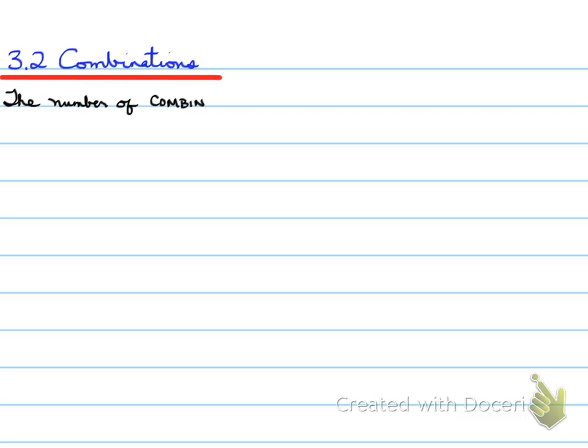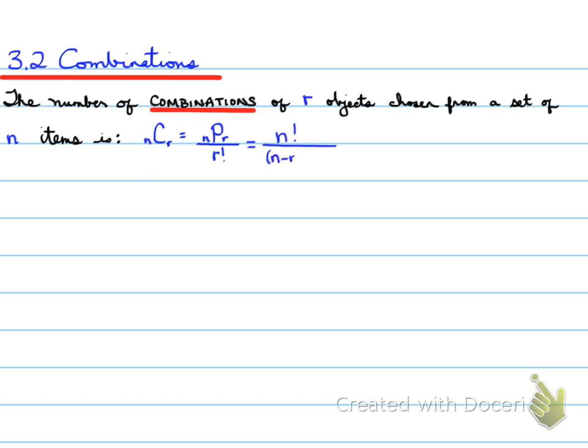3.2, combinations. The number of combinations of R objects chosen from a set of N items is NCR equals NPR over R factorial. We're introducing a new letter called C for combinations. NCR is equal to N factorial over N minus R factorial times R factorial. That is equal to C at N comma R.